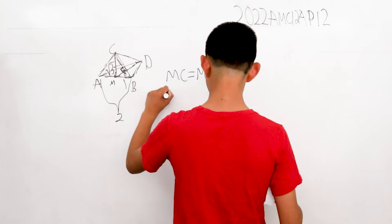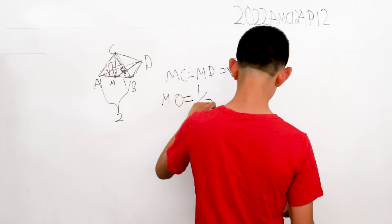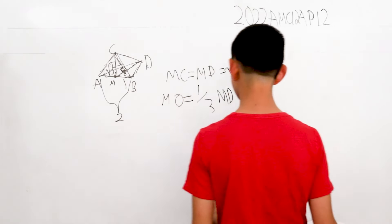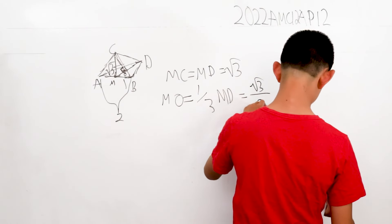So, MO is equal to one-third of the distance of the MD point, which is square root of three over three.